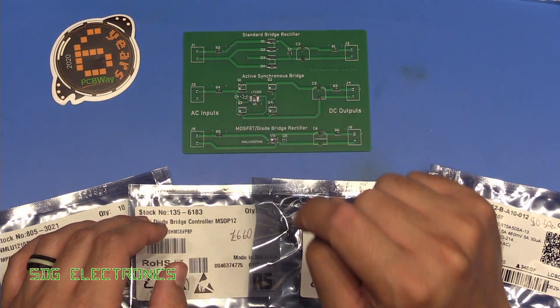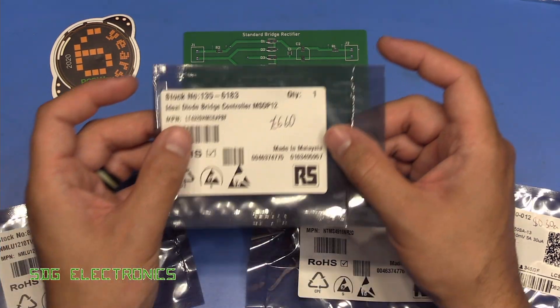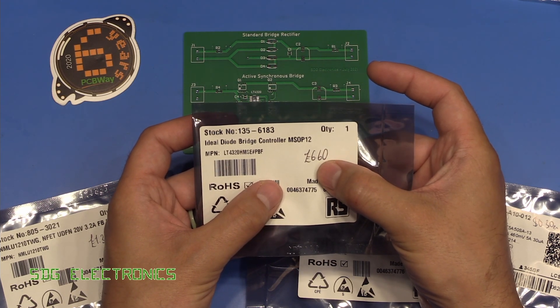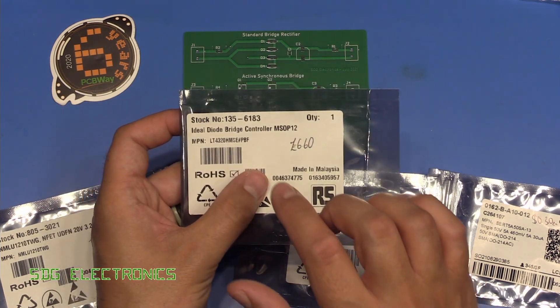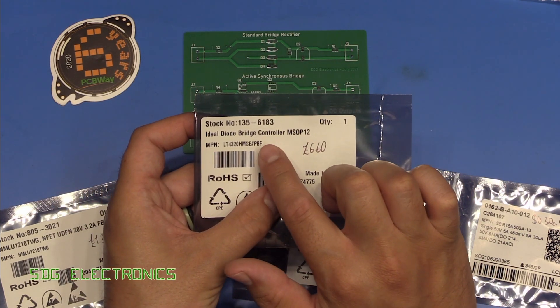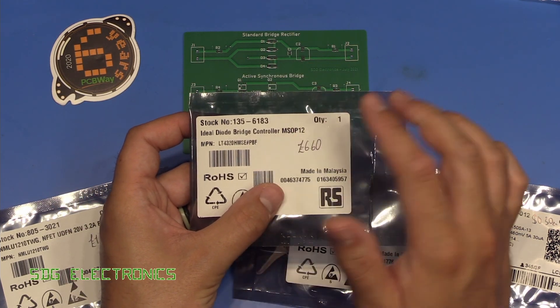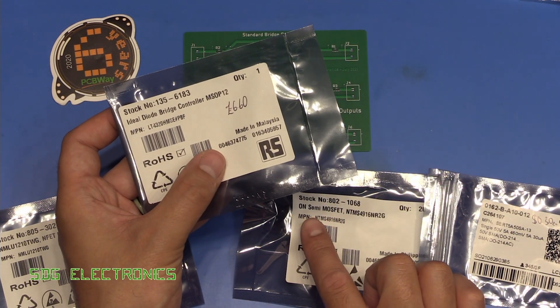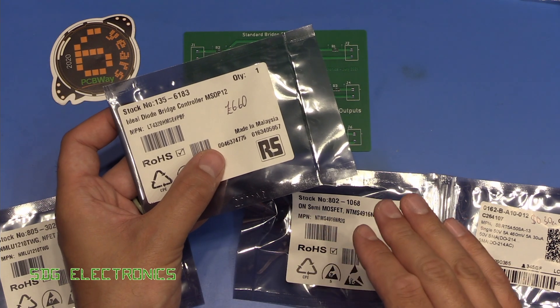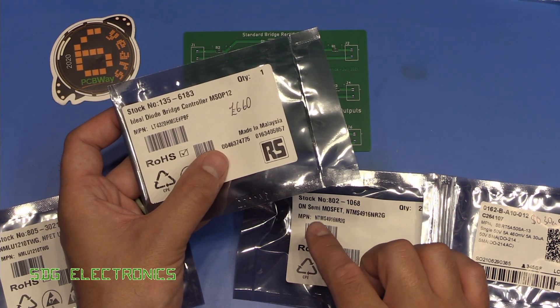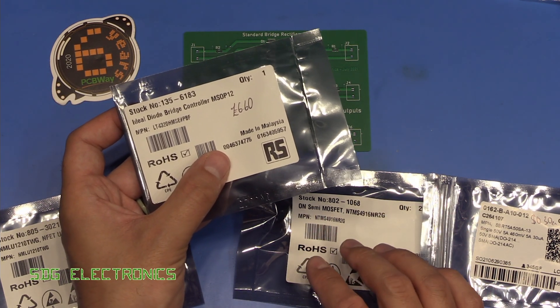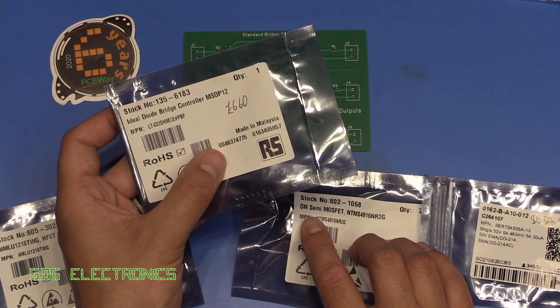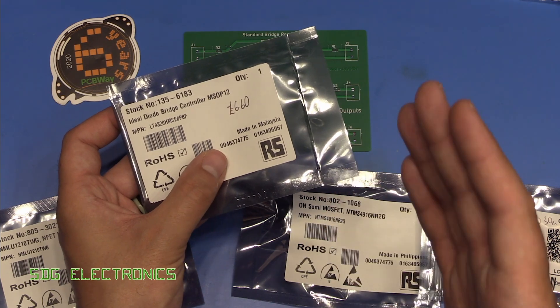Then if we look at the active synchronous bridge, this LT part is very expensive, so £6.60 just for the controller, and then you have to buy some MOSFETs as well. However, the nice thing is that effectively this controller is load independent. All it's doing is switching some MOSFETs and it's doing that very close to the zero crossing point. Basically as soon as it's able to, it's starting to drive that gate.